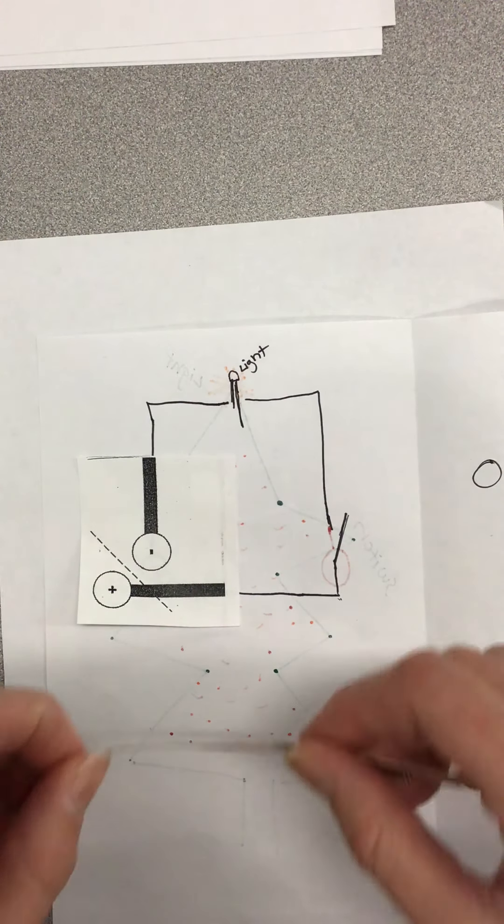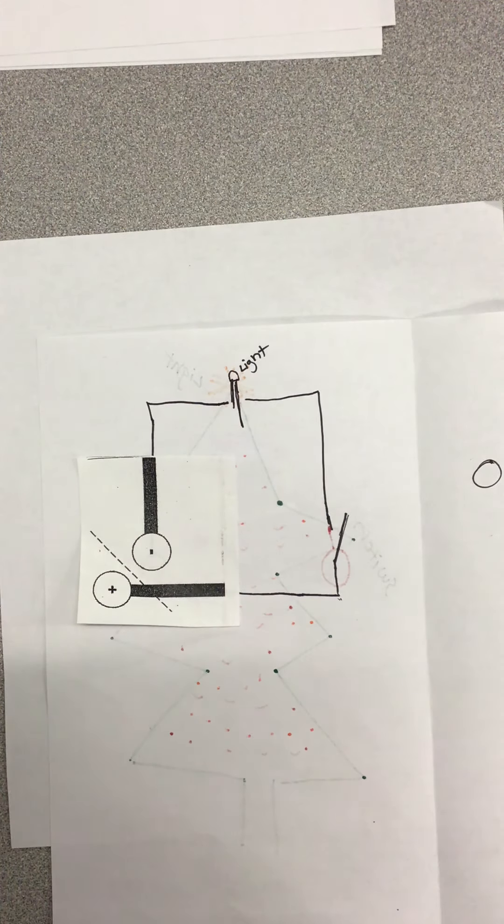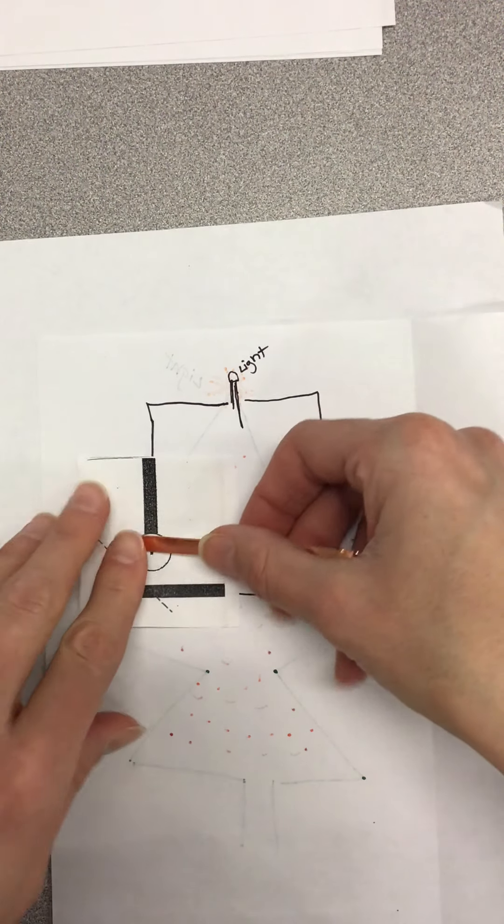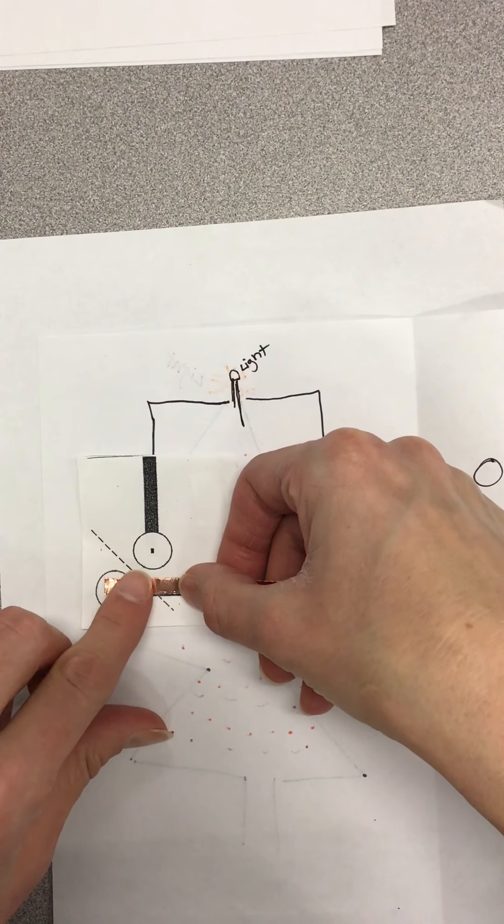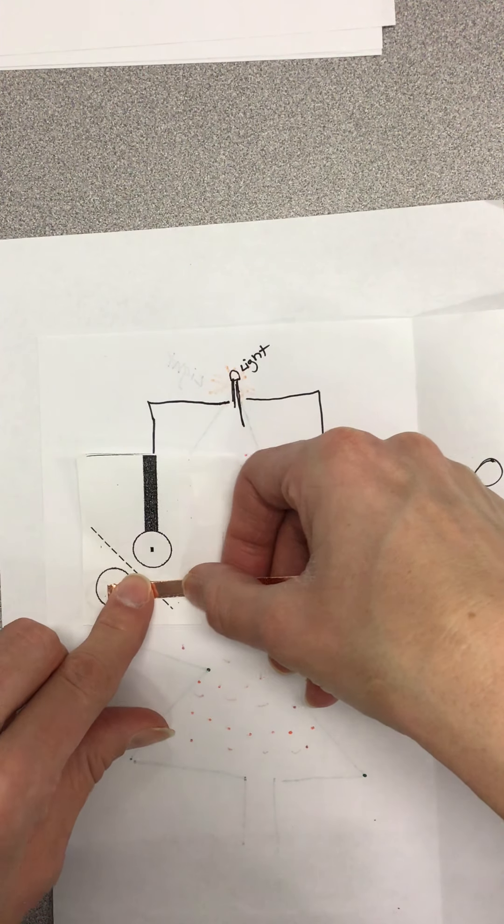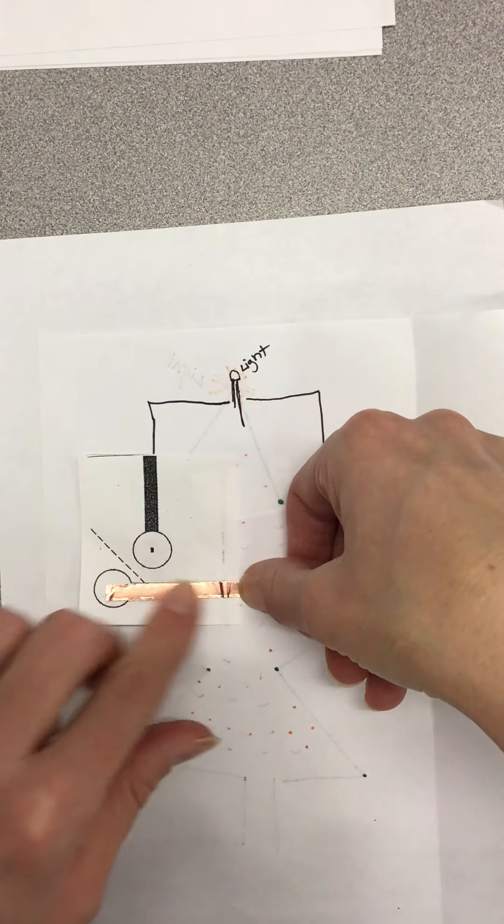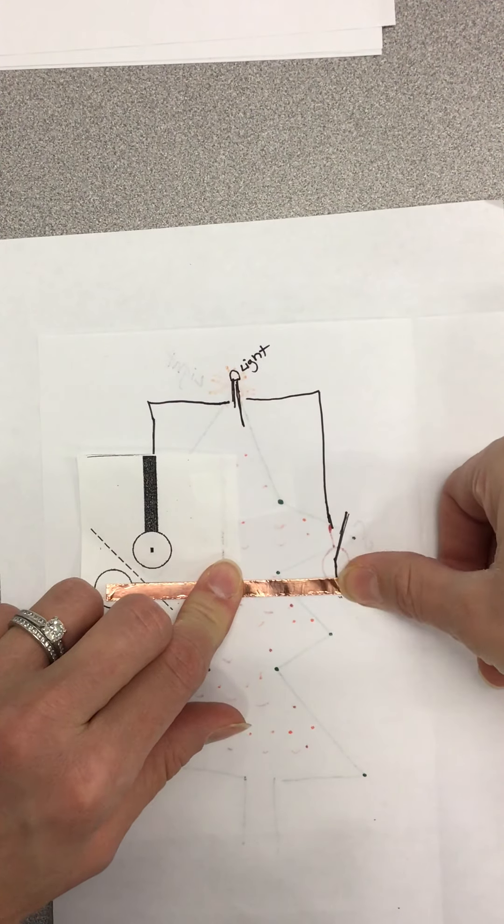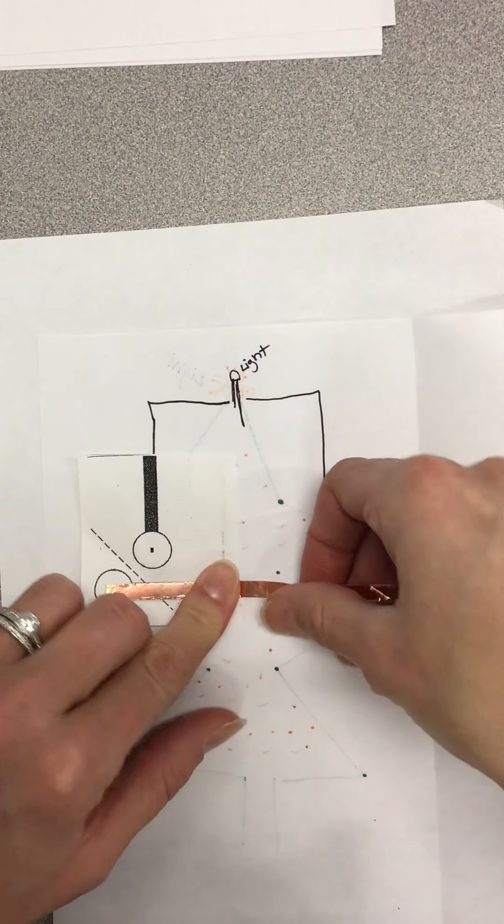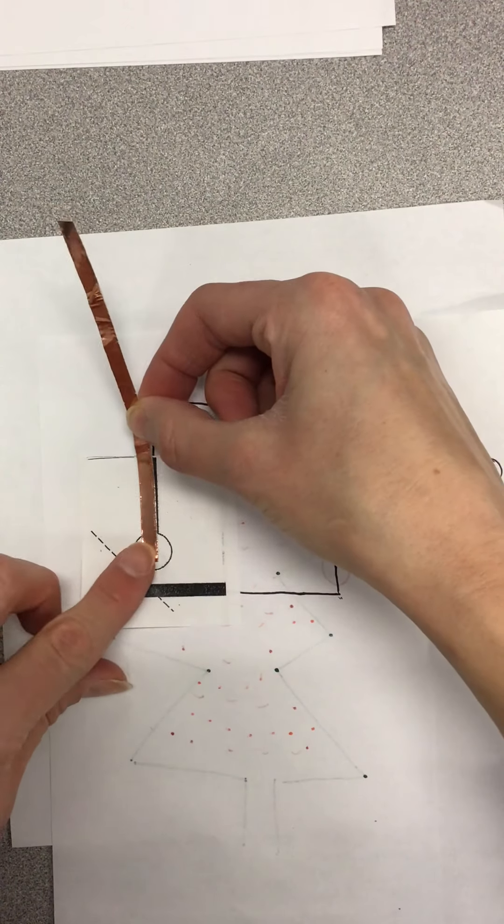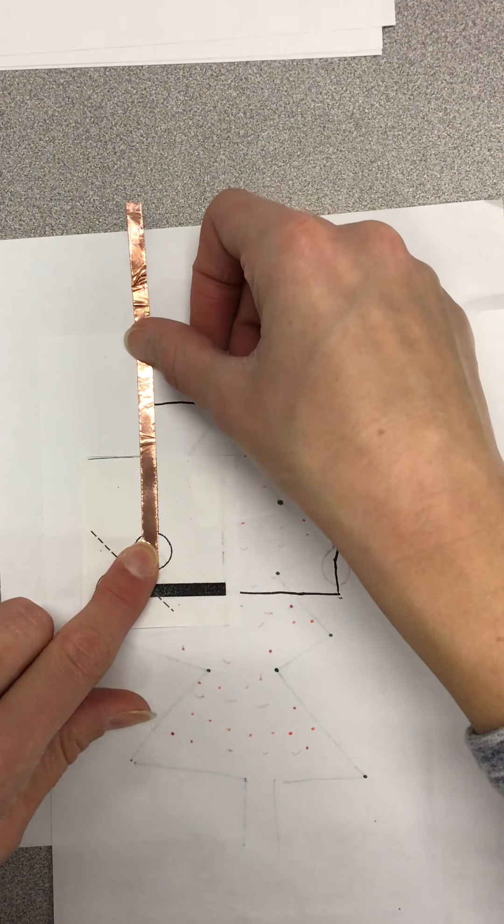Then when you do your copper tape, make sure that when you place it down you have the copper tape go over that and go along your route here, and then you also want it to go over this and along your route here.